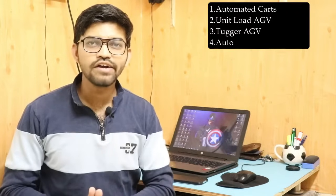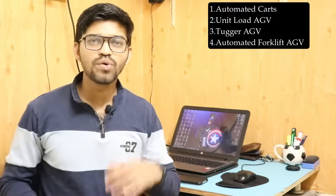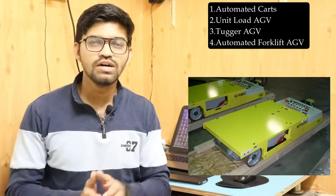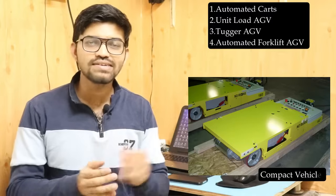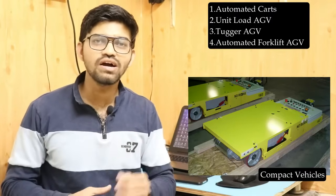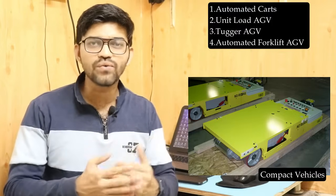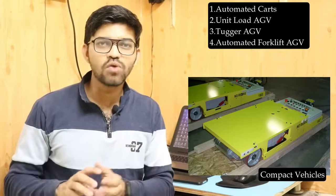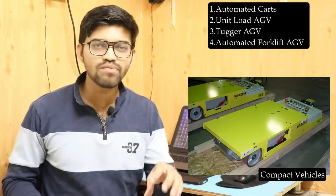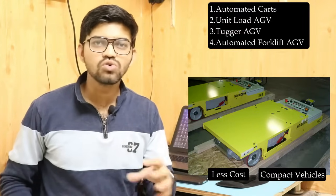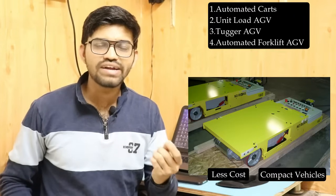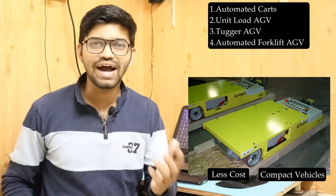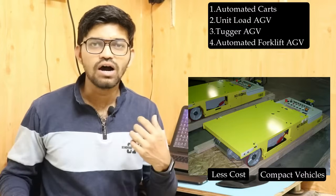There are different types of AGVS systems: automated carts, unit load AGVS, tugger AGVS, and automated forklifts. The first type is automated carts — the simplest form of AGVS. These are smaller vehicles that can travel over longer distances but carry relatively less unit weight, similar to trolley wheels. This type is widely adopted by many industries due to its low cost. It is very economical, and its weight-carrying capacity is on a quite high side, which is why it is adopted by most industries.